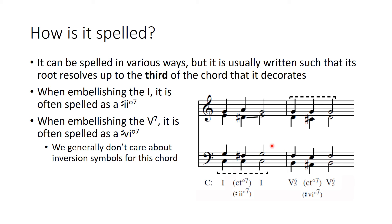When we're embellishing the V7, it's generally spelled as a sharp-vi°7, so we have A♯, C♯, E, G. The A♯ is again moving up to the third of the G chord here. But even though that's usually how it's spelled, we don't care much about the inversion symbols for the chord, and it could be spelled in other ways as well.